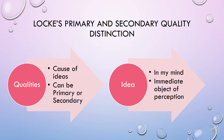Let's have a look at how Locke explains perception. We gain ideas about the world — these ideas are in my mind and are my immediate objects of perception. They can be the idea of redness, warmth, loudness, or bitterness. Locke says there are certain qualities in objects that cause our ideas, and there are two ways of seeing these qualities: they can be primary or secondary.